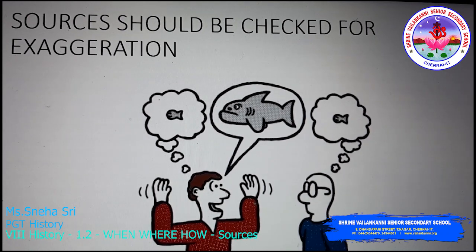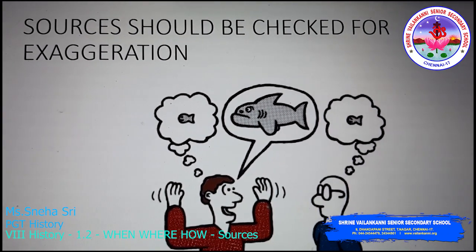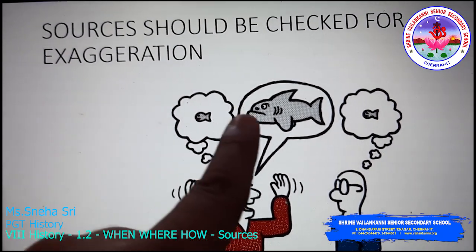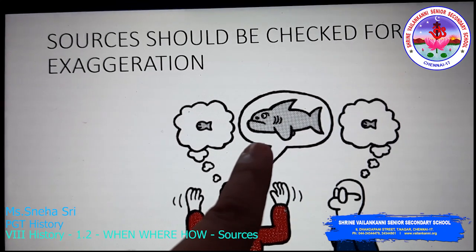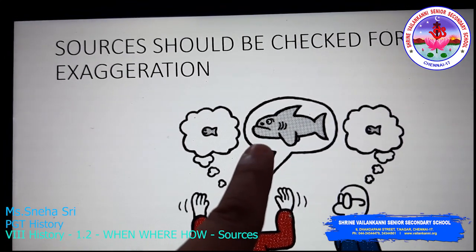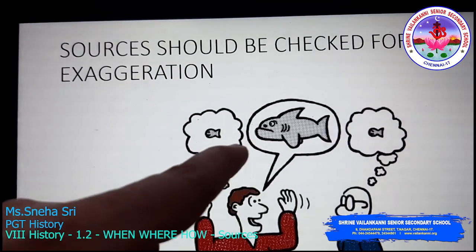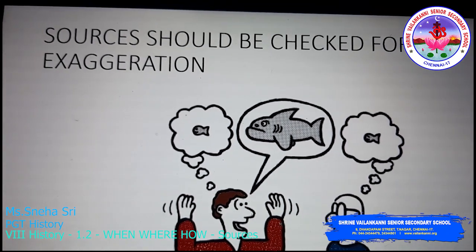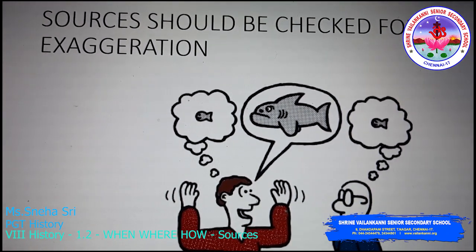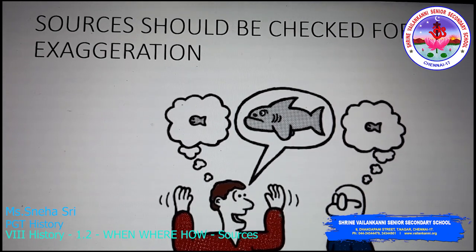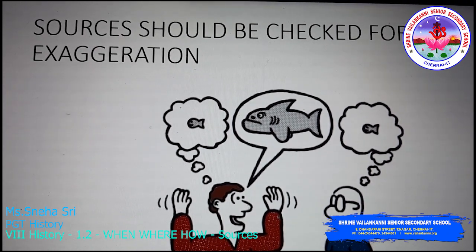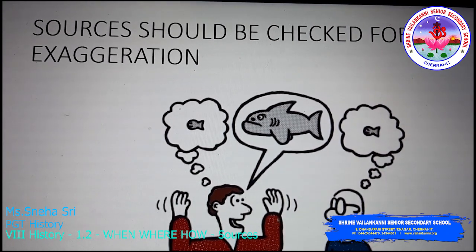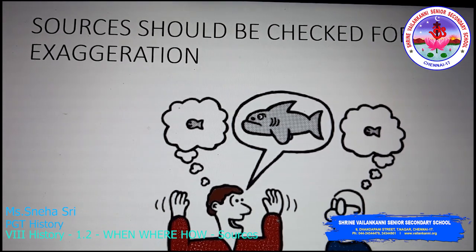A very important point to be noted: sources should be checked for exaggeration. Exaggeration means the actual topic will be very small or normal, but people will explain or show it as a big or abnormal topic. A small, normal topic will be discussed as a very big, abnormal topic.